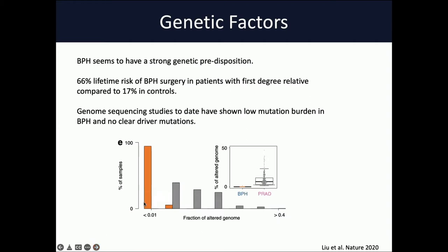One of the other epidemiological considerations of BPH is a genetic predisposition. Epidemiological data suggest a very strong genetic predisposition for BPH: if you have a first-degree relative who's had BPH surgery, your lifetime likelihood of needing it is up to 66% compared to 17% in controls. Despite this reproducible genetic predisposition, genomic sequencing has been pretty low yield in looking at a genetic factor responsible for BPH. The mutational burden in the disease is actually quite low compared to prostate cancer, with much lower genomic alterations in BPH and no identifiable driver mutations as of yet.